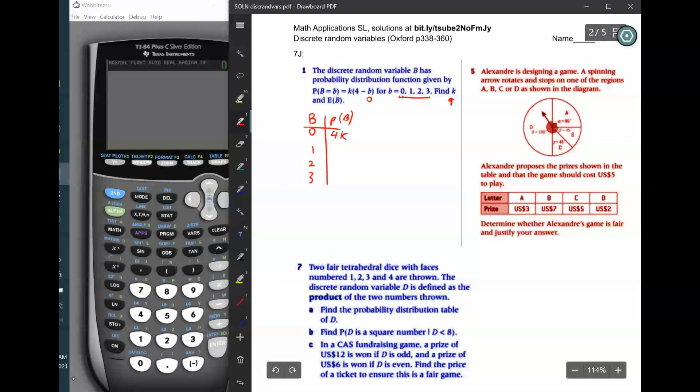Then you put in one. If you put in one, it will be four minus one, which is three, so it'd be three k. And then we'll put in two. If you put in two here, it'll be four minus two, which is two times k, which is two k. And finally, if you put in b equals three, then it'll be four minus three equals one, one k.